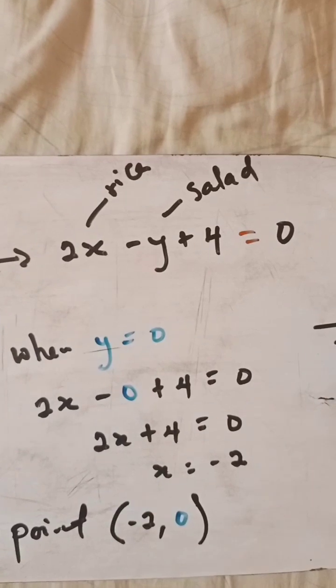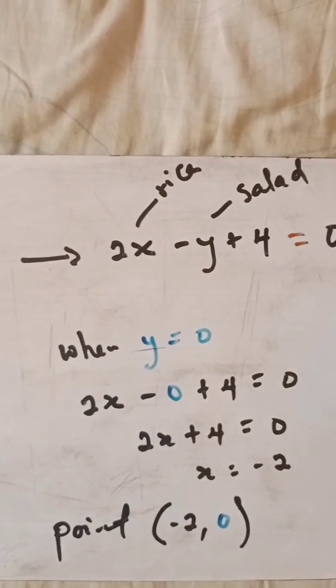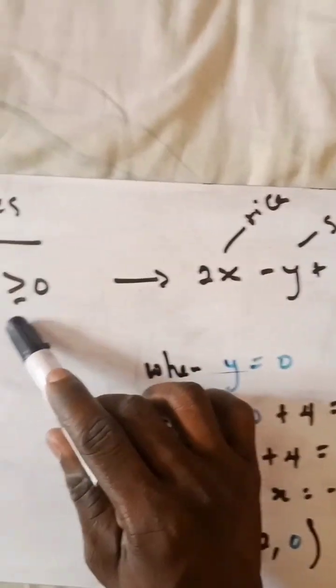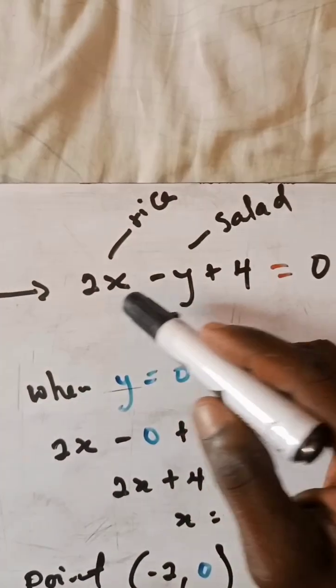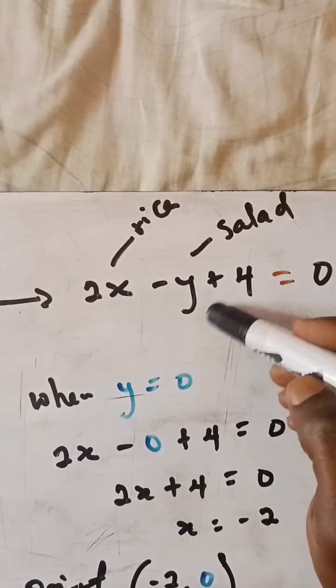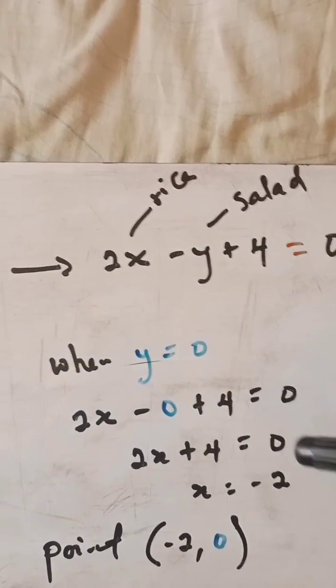If you haven't checked our video, make sure that you subscribe to the channel and check the playlist below. So changing the inequality to an equation, then we are going to solve that. I'm calling the x here rice and then y is salad. The key here - you've already solved for the x, that's why you need to check the video or subscribe to the channel.